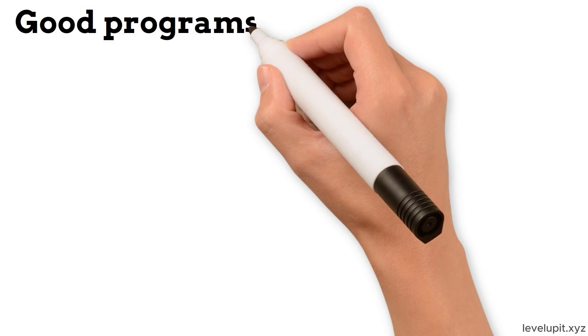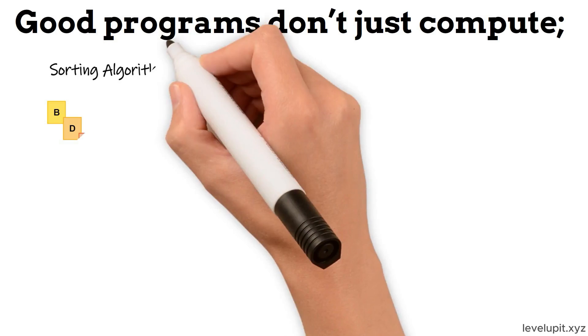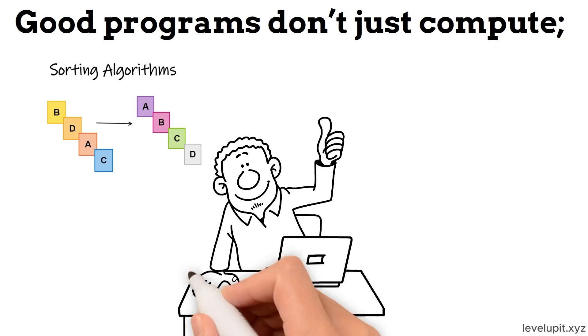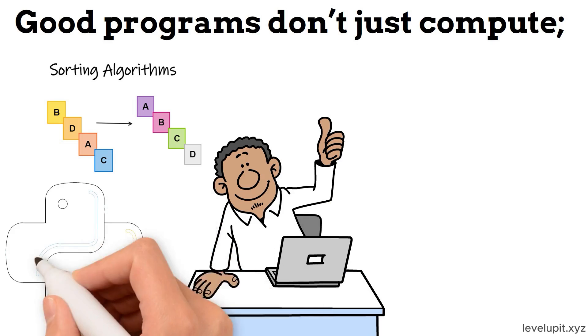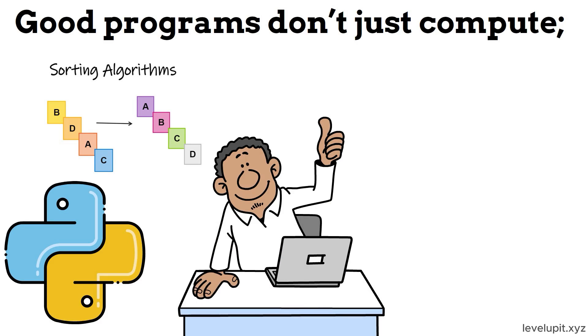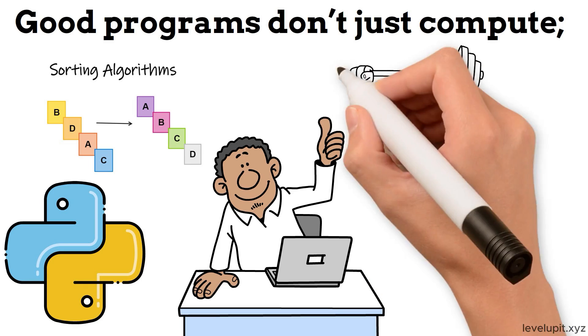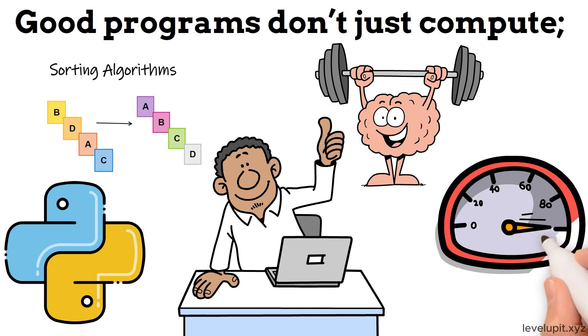Good programs do not just compute. They arrange data so the next steps become easy. Sorting is that arrangement step. With the right simple examples in mind and a few everyday patterns at your fingertips, choosing a sorting algorithm becomes natural. Use the built-in sort first and shape it with a key. Insert smartly when the list is nearly sorted. Merge when you are combining already sorted parts.